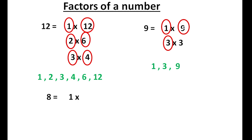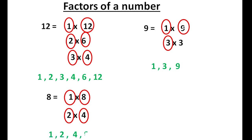1 is a factor of any number, so 1 into 8. Check 2: 2 fours are 8. Check 3: 8 is not in the 3's table. Check 4: 4 into 2 is 8. We can stop here. The factors are 1, 2, 4, and 8.